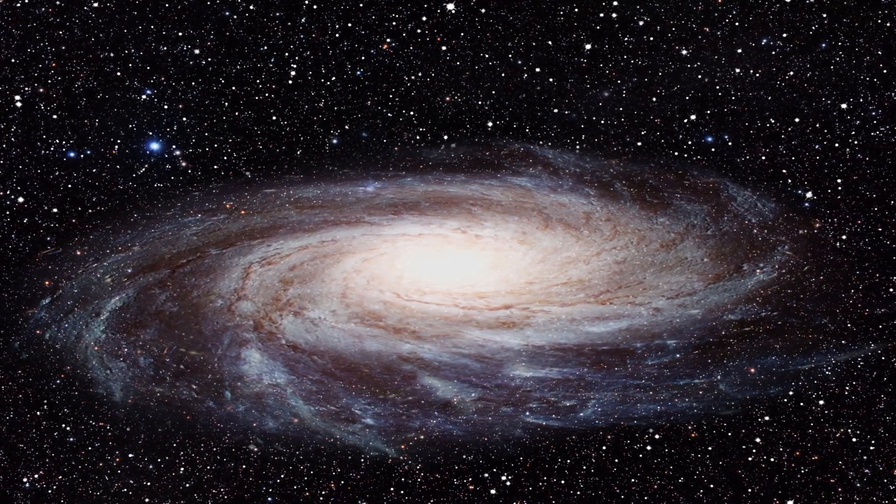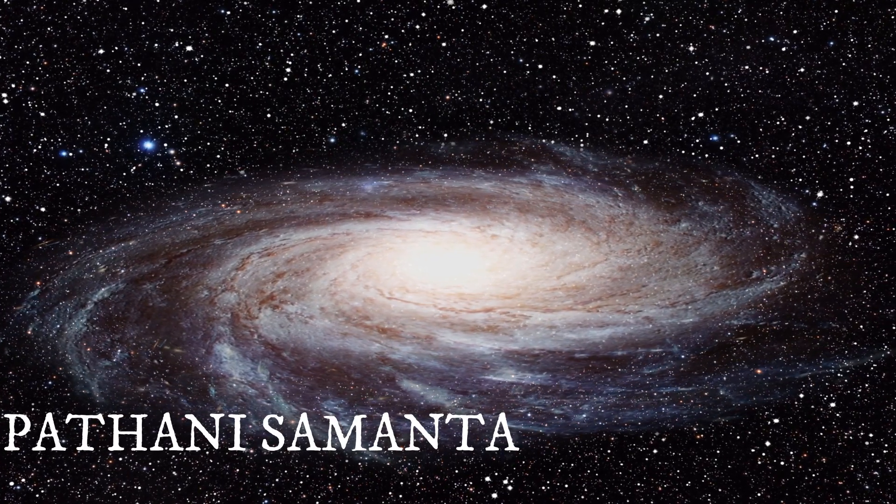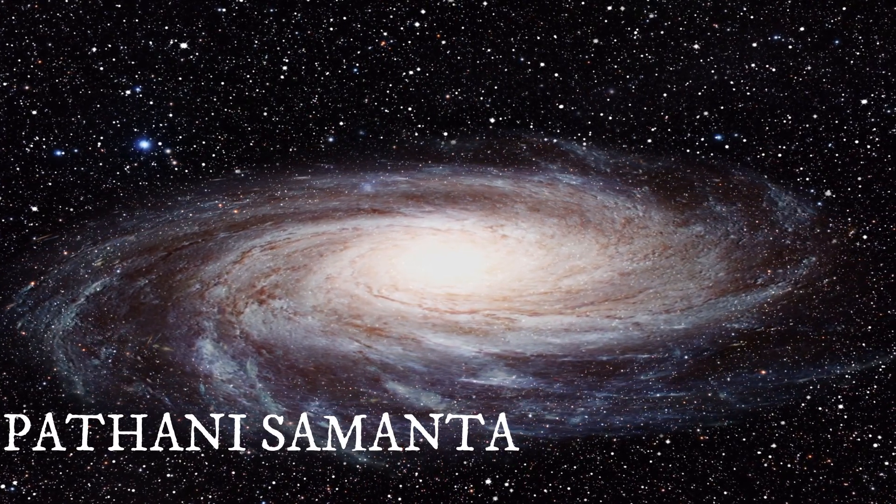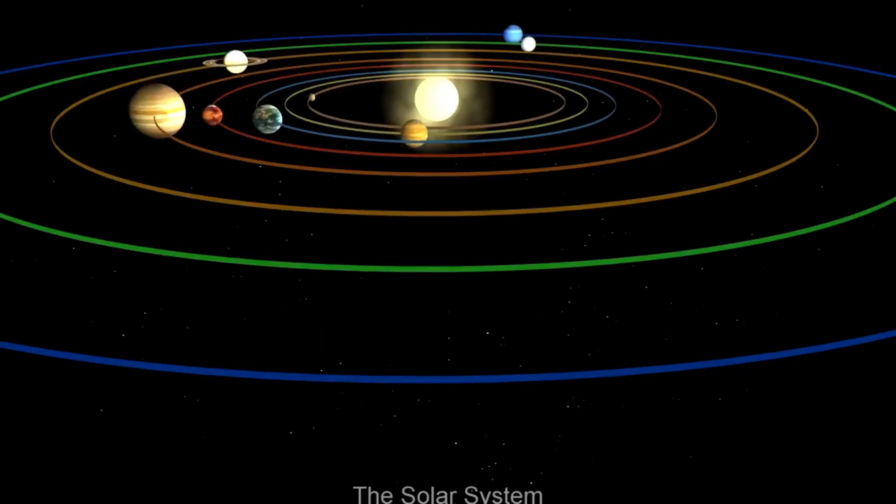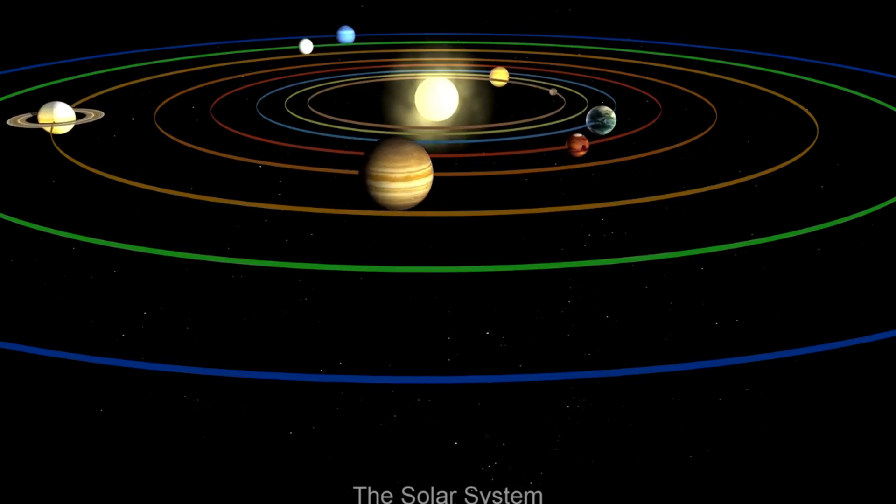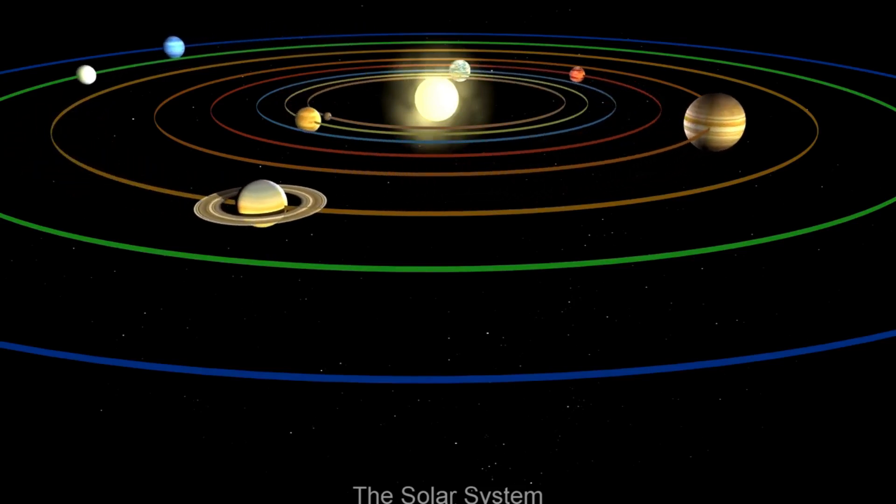Fondly known as Pathani Samanta, he started identifying stars at a very early age. By the time he was 15, he learned to calculate the paths of planets and other celestial objects.